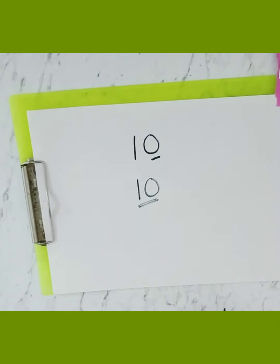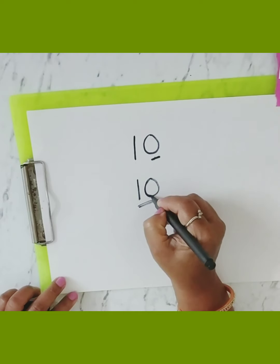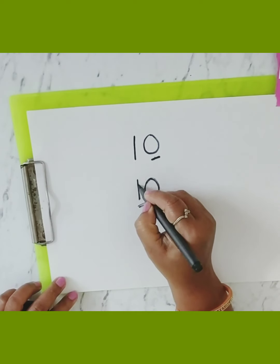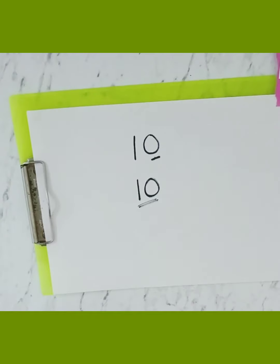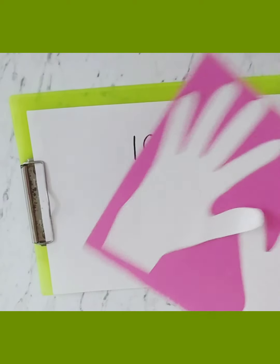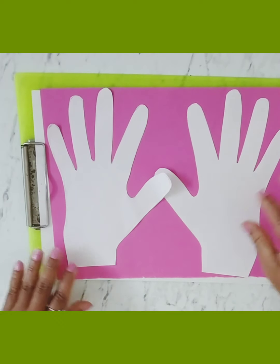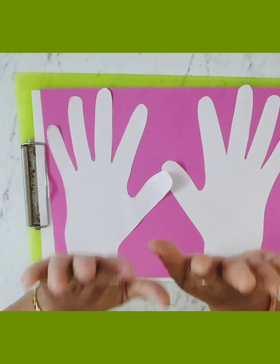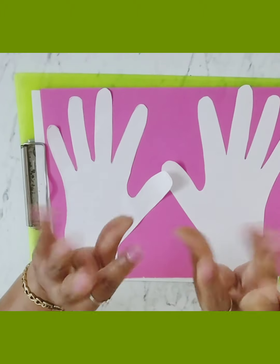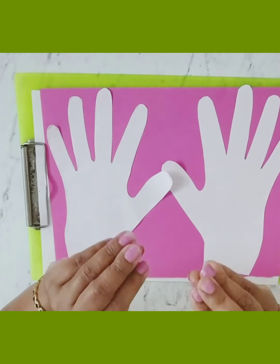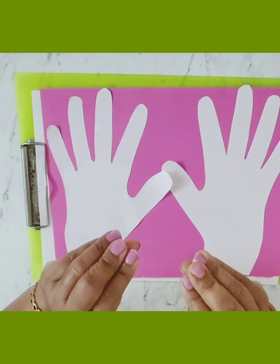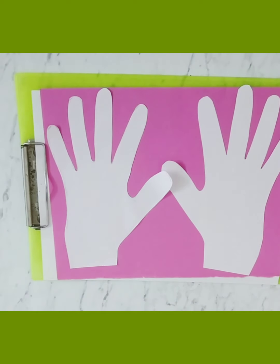So this is number 10. Bas aapko yaad rakhna hai — 1, 0, ten. We have 10 fingers in both hands. How many fingers we have in both hands? 10 fingers.